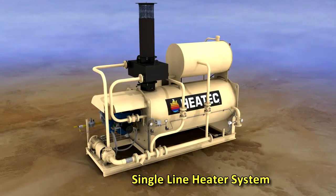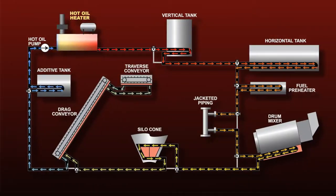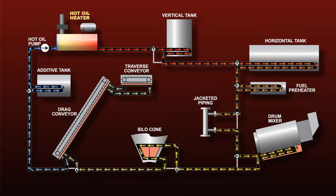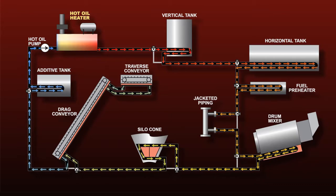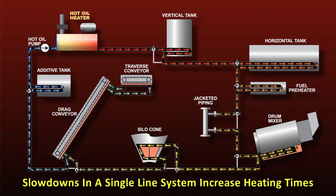The single-line heater has pipe connections for a single external circuit. It has a single pump that circulates the oil through the heater coil and through the external circuit. A single pipeline circulates the oil from the outlet of the heater to all components connected in series with each other. But a number of components in series create a lot of resistance to flow, which dramatically slows down how fast the hot oil flows through the components and returns to the heater, noticeably increasing the time needed to heat the components.